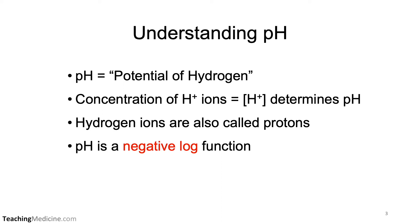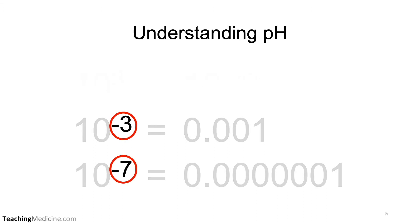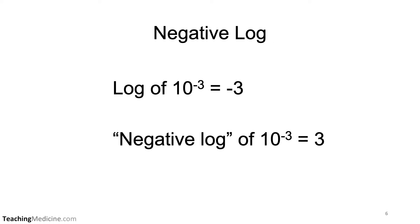We're going to discuss that pH is a negative log function in the next couple slides. Remember that with exponents, 10 to the power of 3 means you have three zeros, 10 to the power of negative 3 means you have three decimal places, and 10 to the negative 7 means you have seven decimal spaces. An easy way to think about the log function is that the log of 10 equals the exponent — so the log of 10 to the power of negative 3 equals negative 3. The negative log is the negative of this value, so the negative log of 10 to the minus 3 equals 3. And this is how the pH scale works.